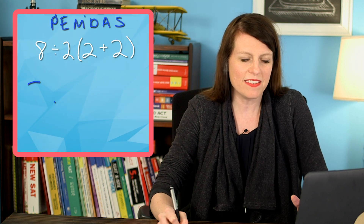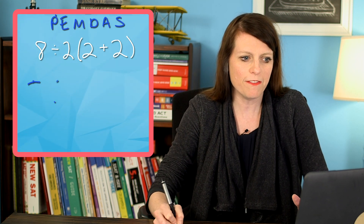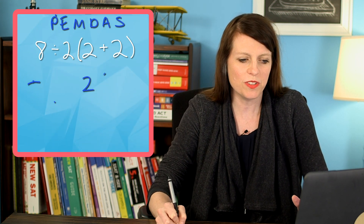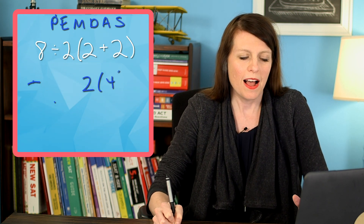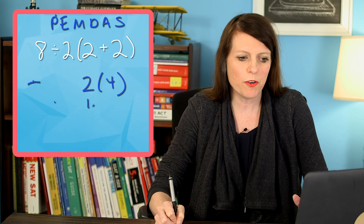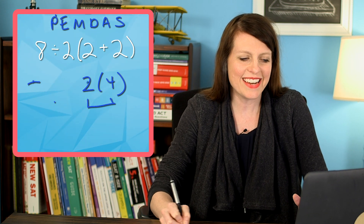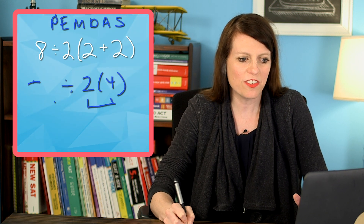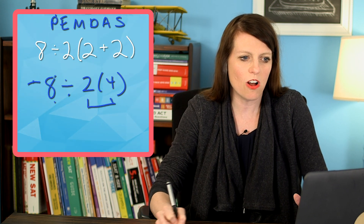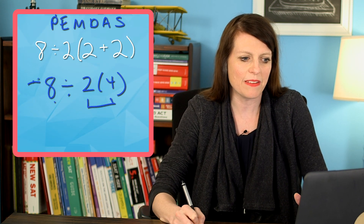Even if you go to the parentheses first, this 2 times 4 — a lot of times whenever we have this next to each other, we assume that that's all a single entity.